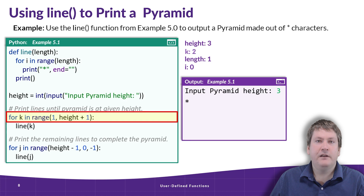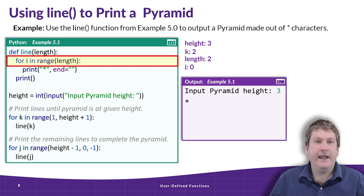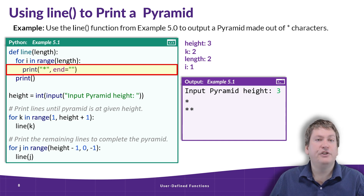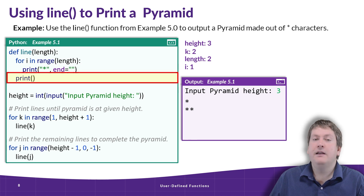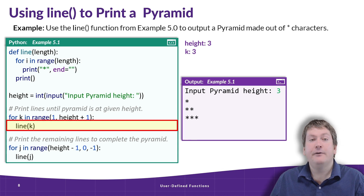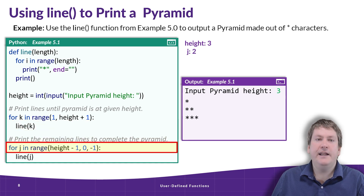After the line function finishes, we jump back to where we called it, which was in this for loop. The for loop then restarts: k is incremented to 2, and we enter the loop again. This time, when we call the line function, we send it an argument of 2, so length is set equal to 2. The loop runs for i equals 0 and then i equals 1, outputting two asterisks. We run the last print line — a print statement with no argument that prints an invisible line break — and resume execution back in the for loop. K is incremented to 3, we call line again, and it outputs 3 asterisks. Finally, the loop is over because k equals height, so we go to the second loop.